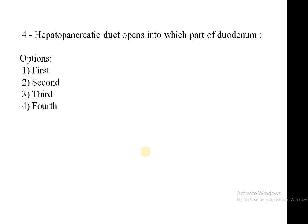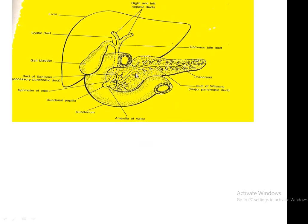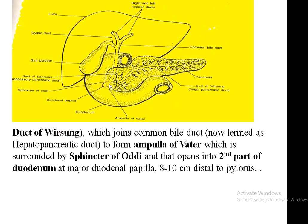Question four: the hepatopancreatic duct opens into which part of the duodenum — first, second, third, or fourth? The common bile duct joins the pancreatic duct (duct of Wirsung) forming a dilated area known as the ampulla of Vater. This ampulla of Vater opens into the major duodenal papilla, bounded by a sphincter known as the sphincter of Oddi. This opening is in the second part of the duodenum, 8 to 10 centimetres distal to the pylorus.